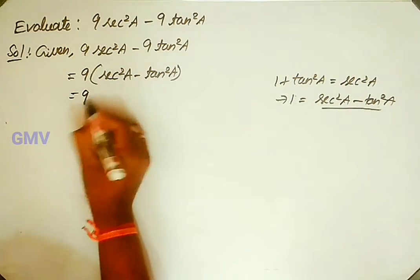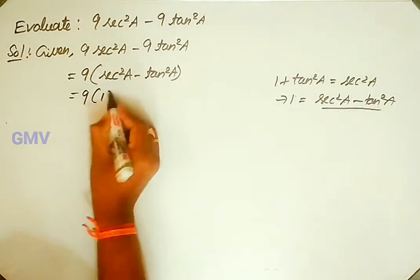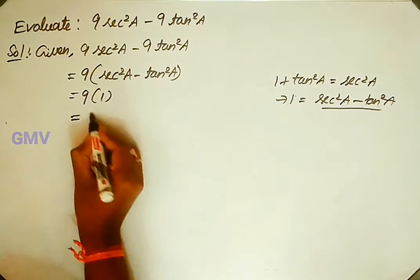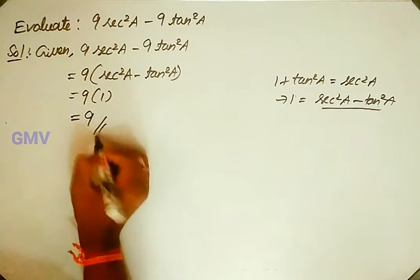Now we put the value as 1, so 9 into 1 is 9.